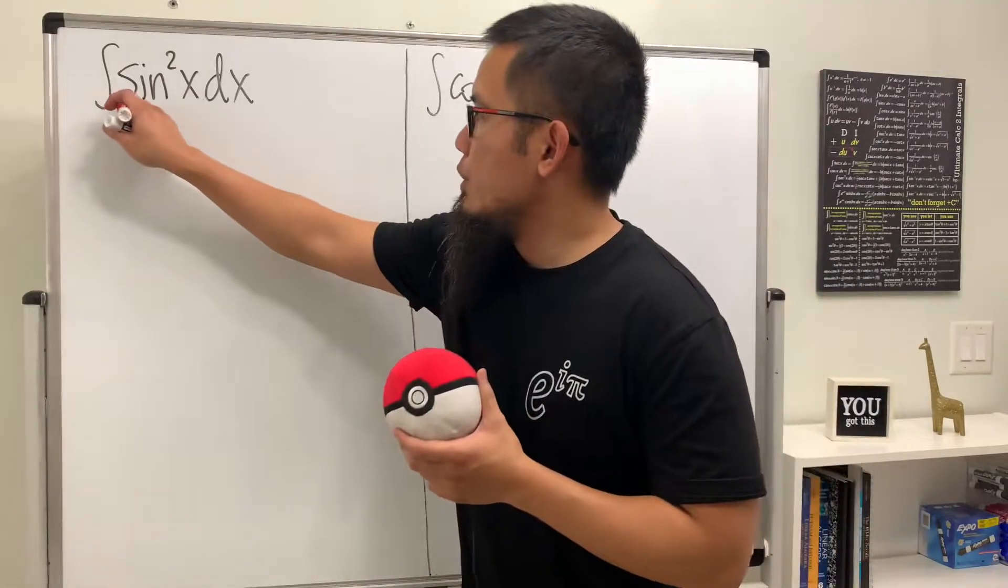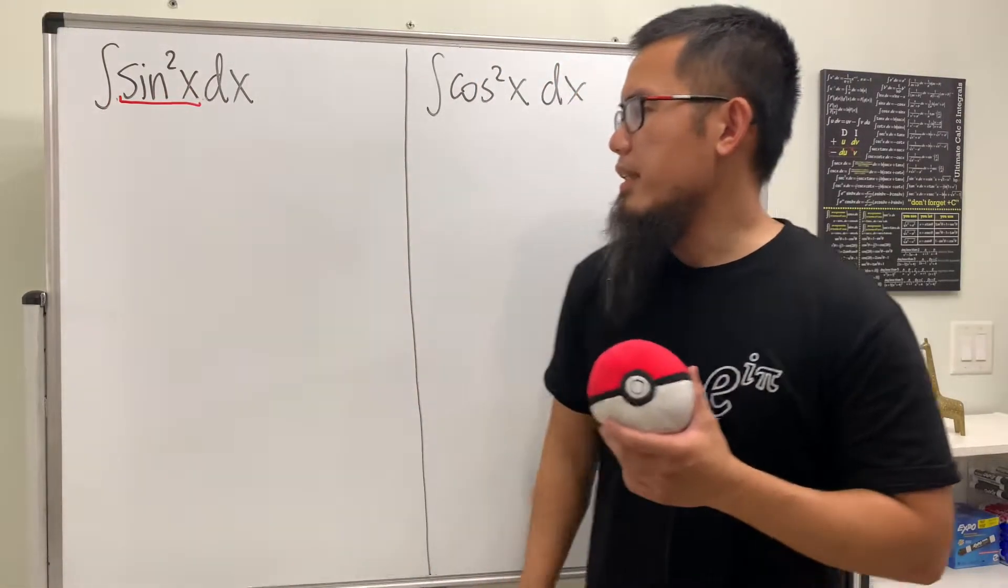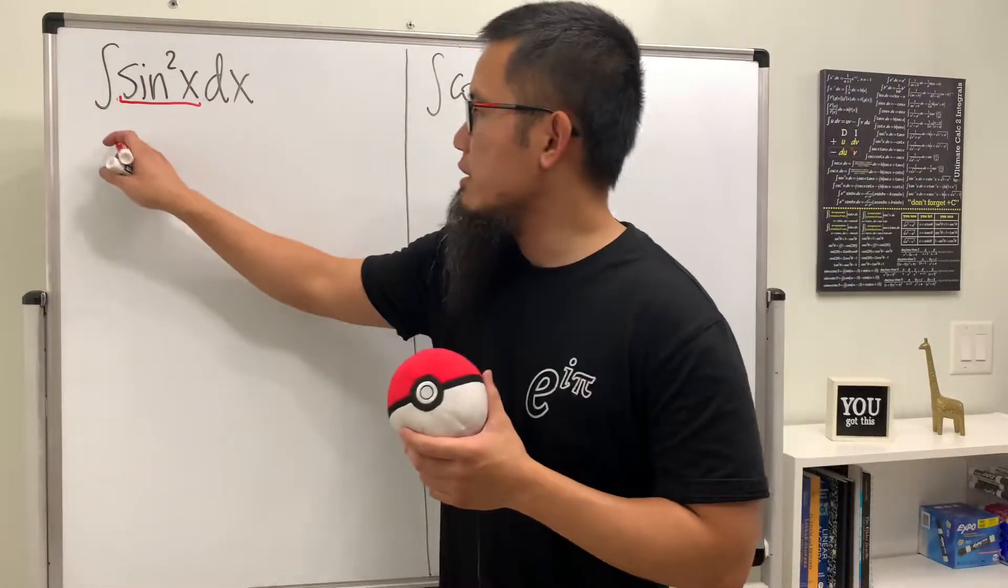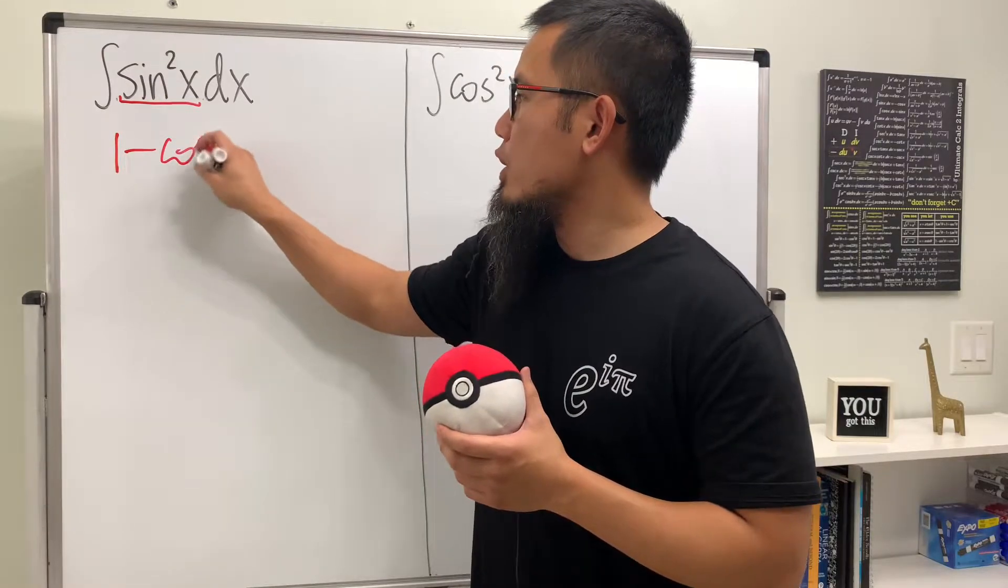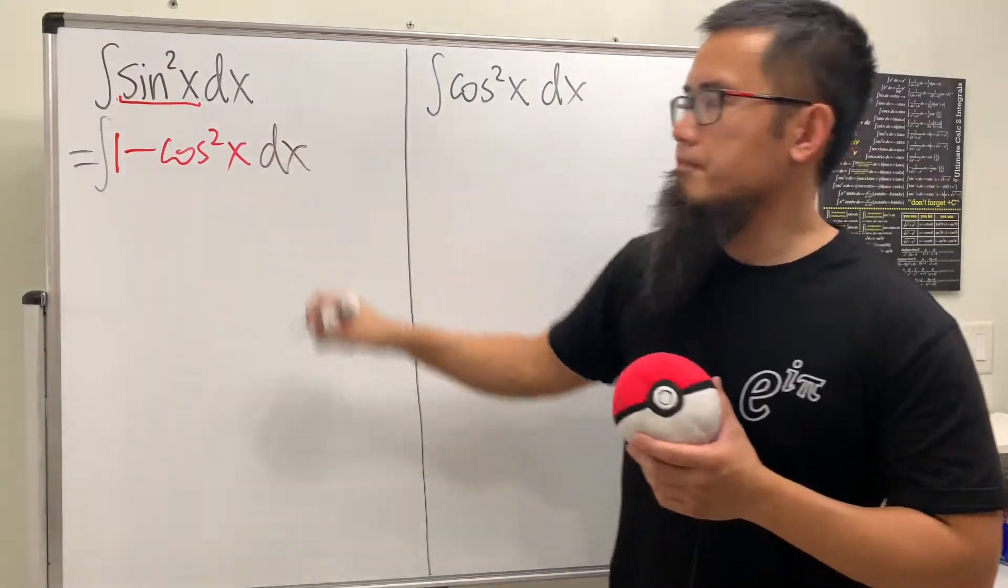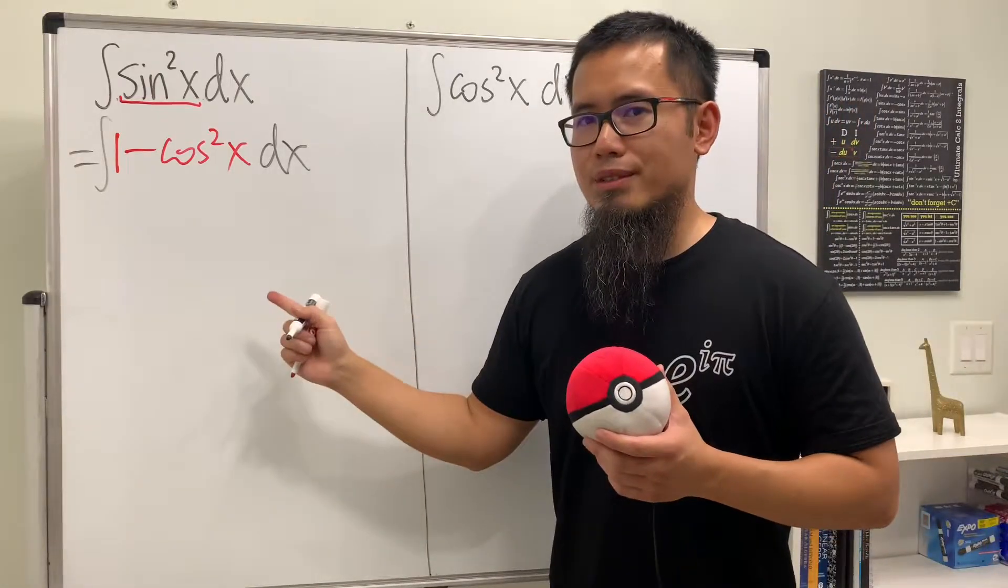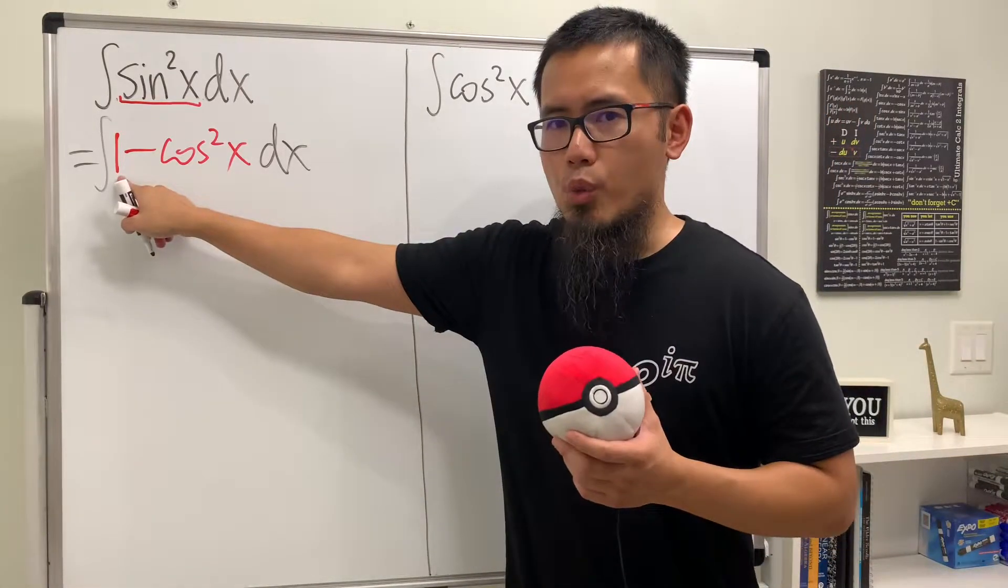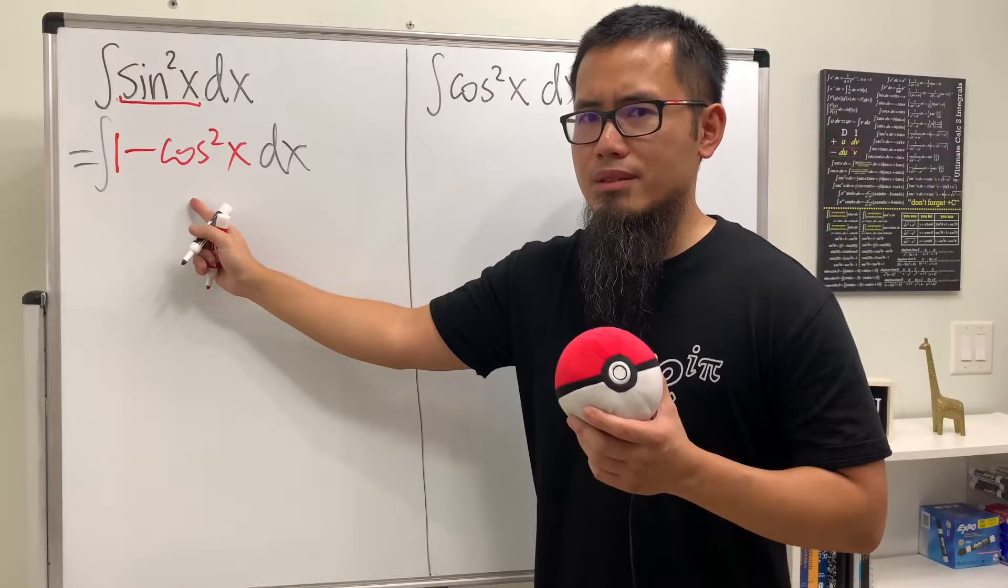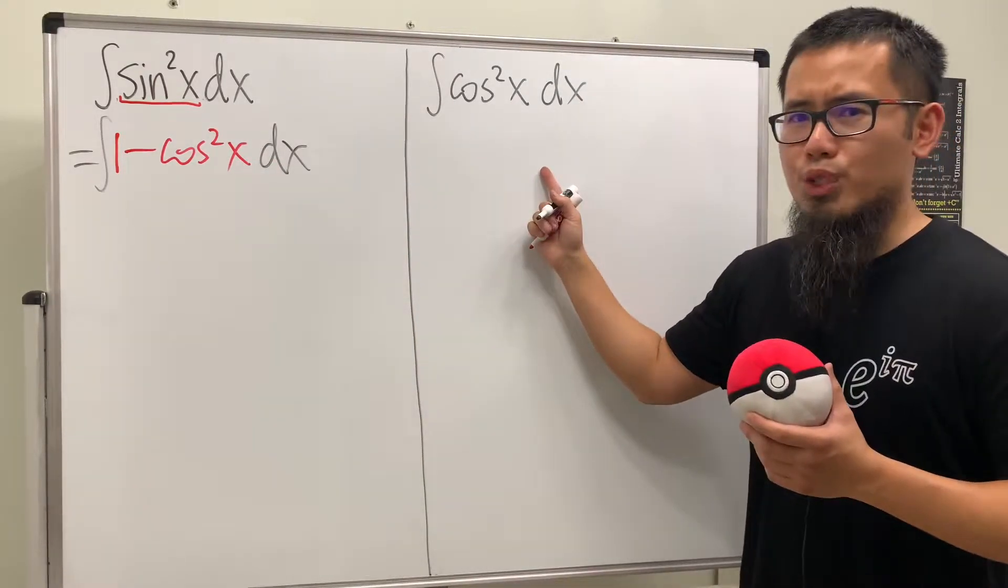Yes, we look at sine squared x and think about which identity that we can use. And perhaps the most famous one is, look at this as 1 minus cosine squared x. And let's just go ahead and integrate that. Can we do this? Because sure, we can integrate 1, but how do we integrate cosine squared x? Maybe we have to do this one first then, huh?